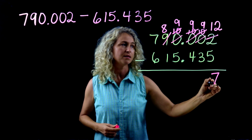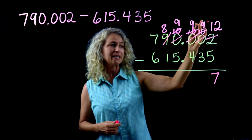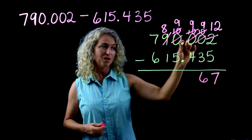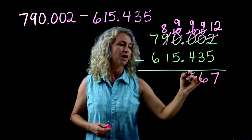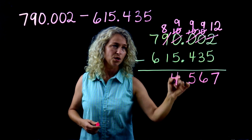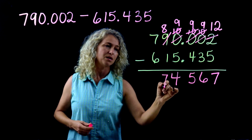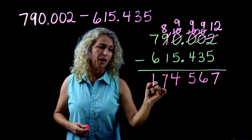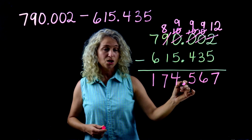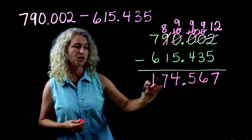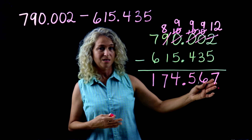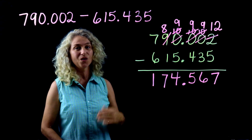So now subtract: twelve minus five is seven. Nine minus three is six. Nine minus four is five. Nine minus five is four. Eight minus one is seven. Seven minus six is one. Do not forget to bring that decimal down.